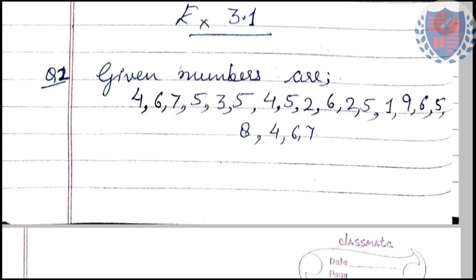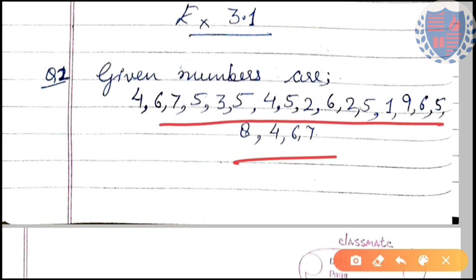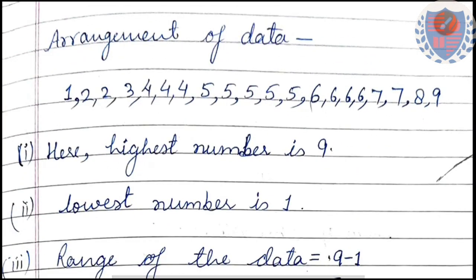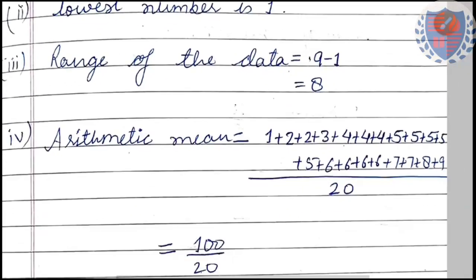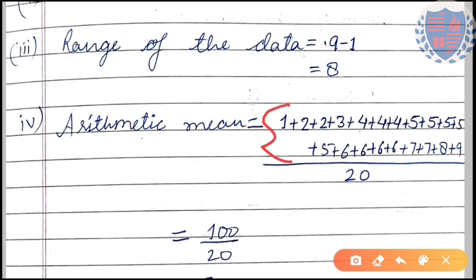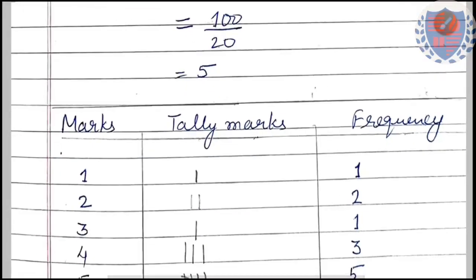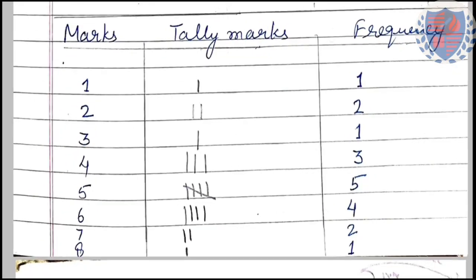Now let us start the NCERT exercise. Question 1 is based on your class data, so I have skipped it. Question 2: a large dataset is given. Let us count — there are 20 numbers. We arrange them in ascending order. The highest number is 9, the lowest is 1, so the range is 9 minus 1 = 8. To find the arithmetic mean, we find the sum of all numbers divided by 20, giving a mean of 5.